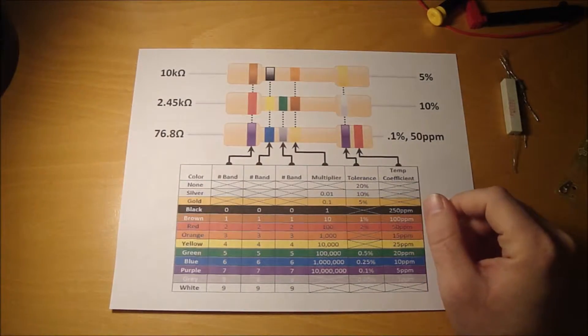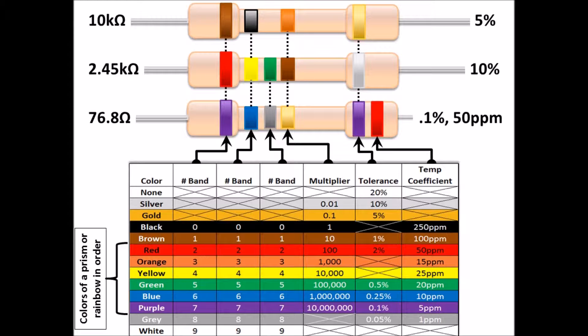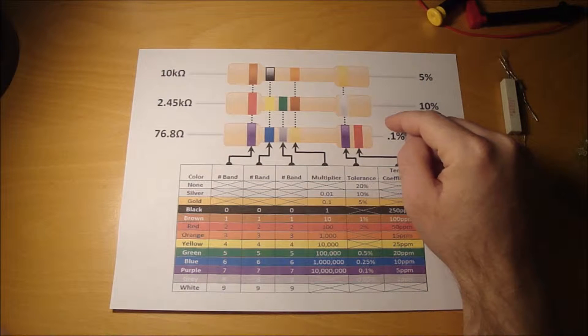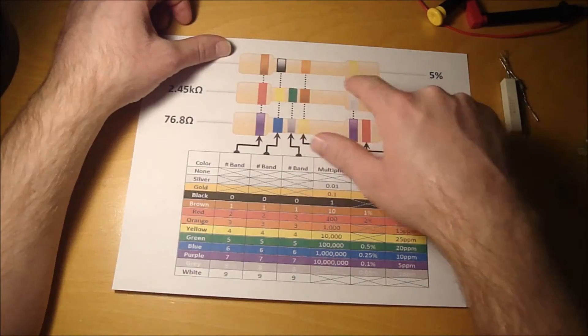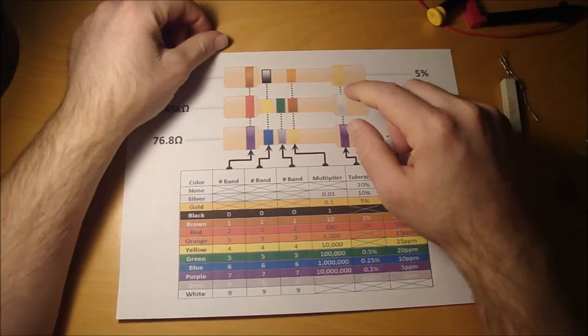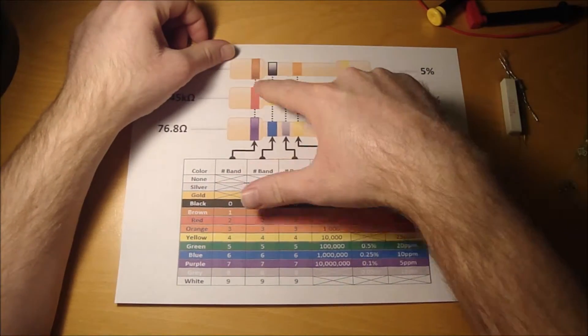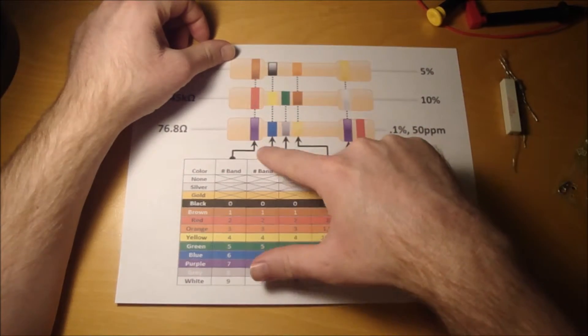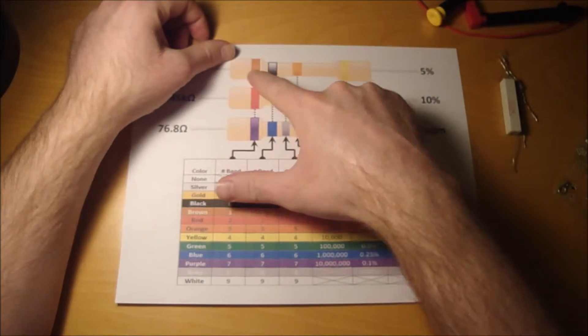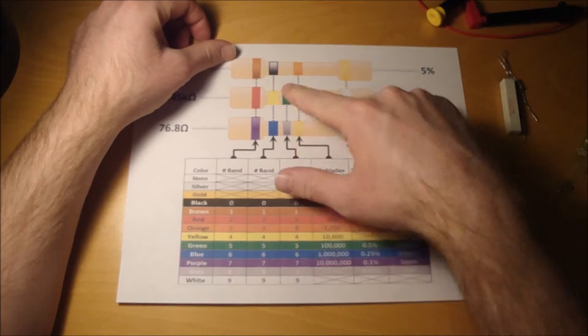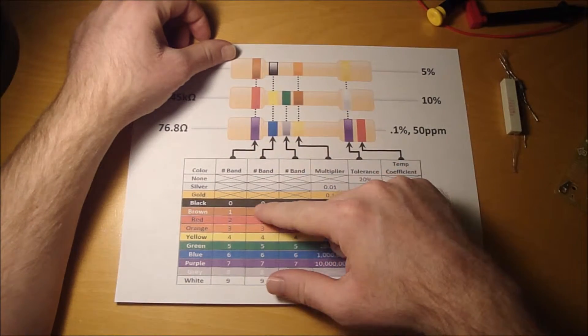Alright, so I put together this slide, and I show here a four band resistor. The first two bands just represent a number. So this one's brown, which is one. Black, which is zero.